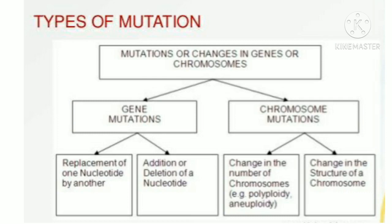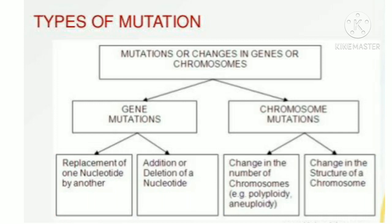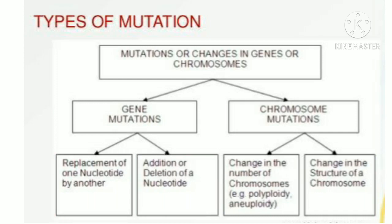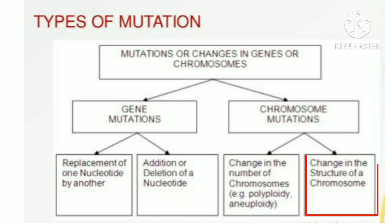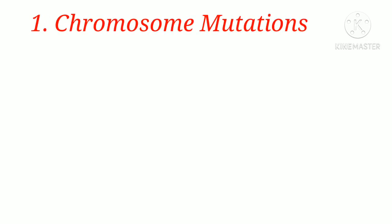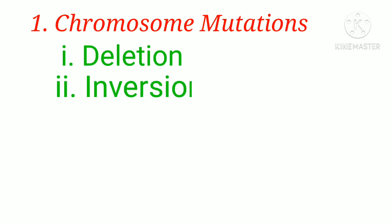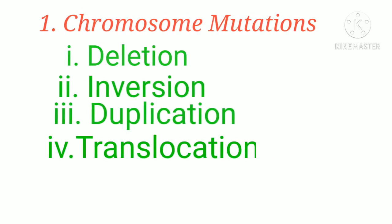There are two types of mutation: gene mutation and chromosomal mutation. A gene mutation happens due to the replacement of a nucleotide by another, or the addition or deletion of a nucleotide. A chromosomal mutation happens due to a change in the number of chromosomes or a change in the structure of a chromosome. There are several types of chromosomal mutations: deletion, inversion, duplication, and translocation.